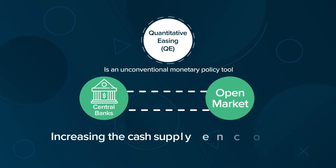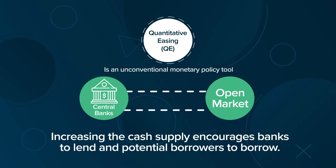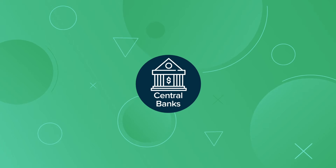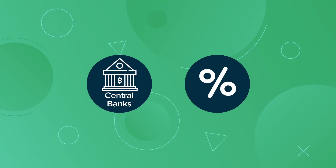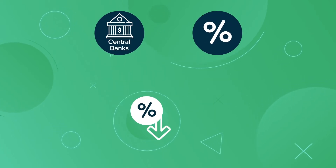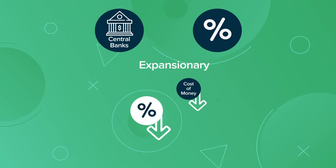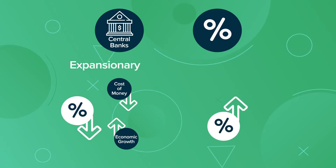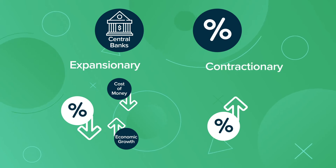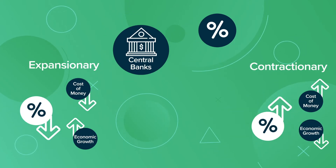Increasing the cash supply encourages banks to lend and potential borrowers to borrow. The central bank's monetary tools often focus on adjusting interest rates. Lower interest rates are expansionary because they lower the cost of money and encourage economic growth, and higher interest rates are contractionary because they increase the cost of money and slow growth.